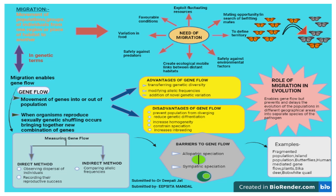Now we will discuss examples. The first example is from plants. Two populations of monkey flowers were found to use different pollinators, such as hummingbirds and bees. That limited the gene flow, resulting in genetic isolation. Eventually it produced two different species: Mimulus lewisii and Mimulus cardinalis.